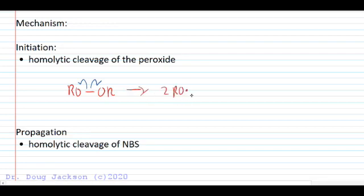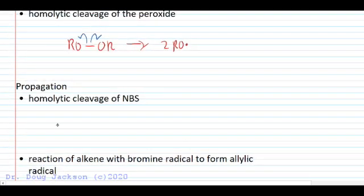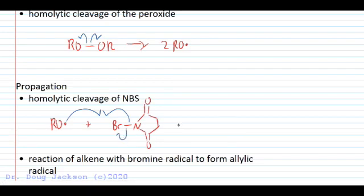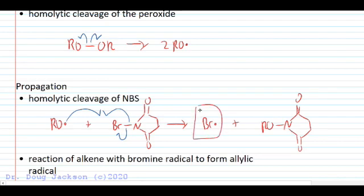Propagation then begins with homolytic cleavage of NBS. Couldn't find a great reference for exactly how this goes, so I'm going to go with our NBS structure here. What most likely happens is that we free up a bromine radical by forming a bond between nitrogen and oxygen and then freeing up that bromine radical. It is well known that the bromine radical is what participates in the next propagation step. Not the clearest information on that byproduct but it is fairly clear that this is required to get the rest of this process going, so we generate that bromine radical.